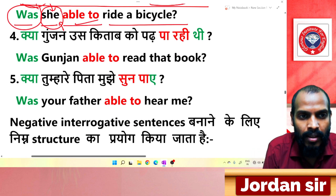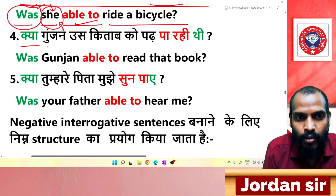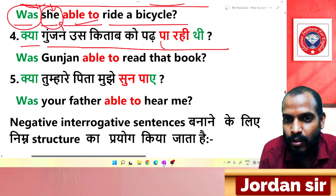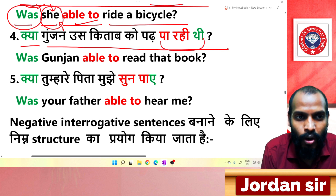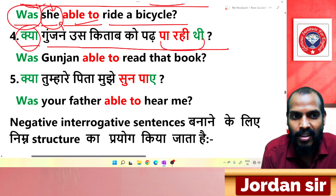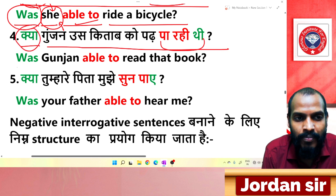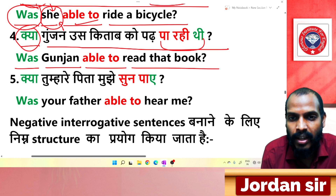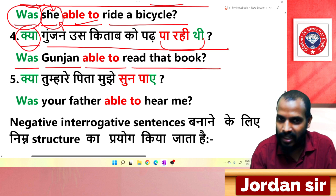Next: 'क्या गुंजन उस किताब को पढ़ पा रही थी?' The ending 'पा रही थी' with an interrogative structure gives us: 'Was Gunjan able to read that book?'